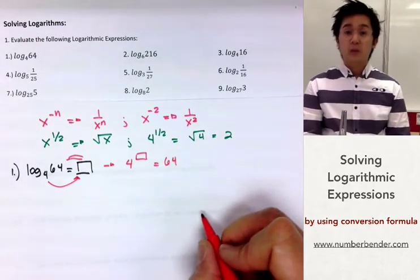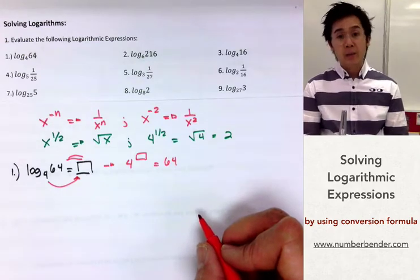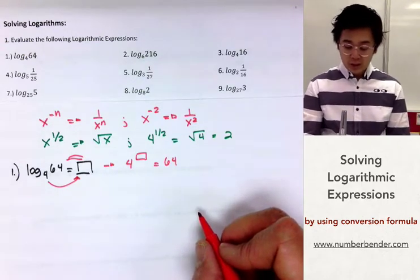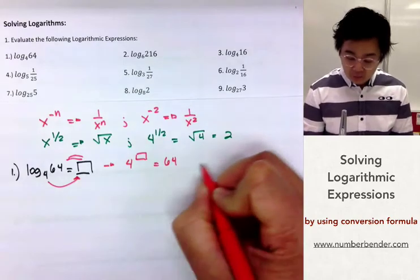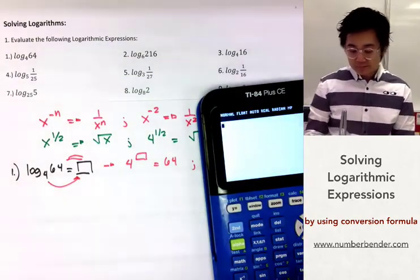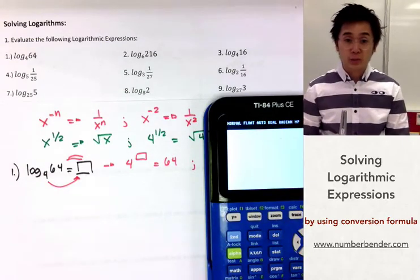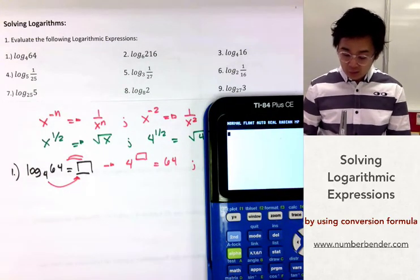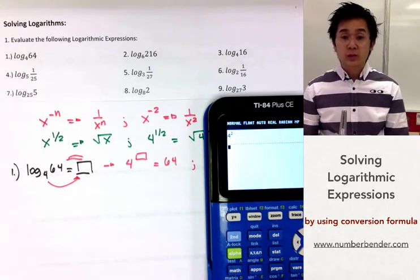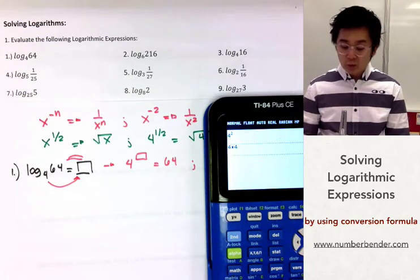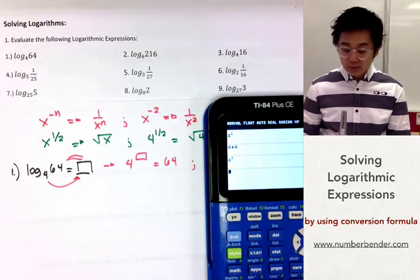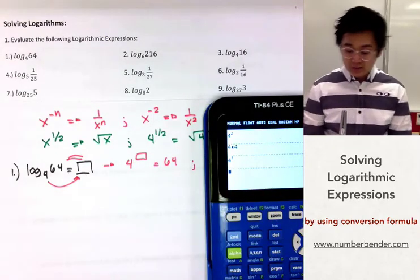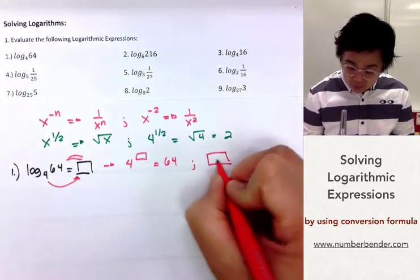We need to figure out using mental math and our multiplication table the exponent of 4 that gives us 64. Using trial and error: 4 raised to 2 equals 16, because 4 times 4 is 16 — so 2 is not the exponent we're looking for. Trying 4 raised to 3 gives us 64, which means the exponent we're looking for is 3. So the number in the box is equal to 3.